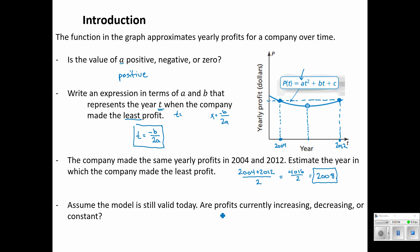Assume the model is still valid today. Are profits currently increasing, decreasing, or constant? Well, present day would be over here on our T-axis, and you can see that our graph is on the rise. So if that parabola were to continue, the profits are currently increasing because the graph is gaining height as we move further in time.